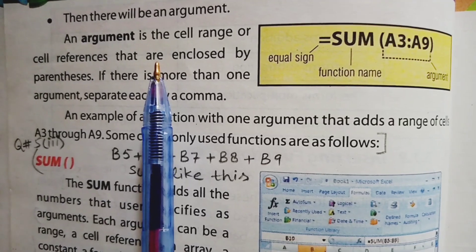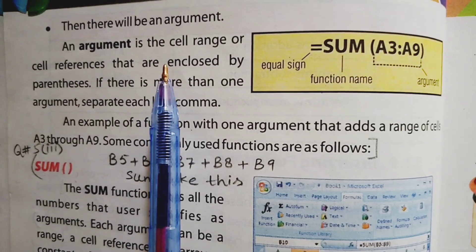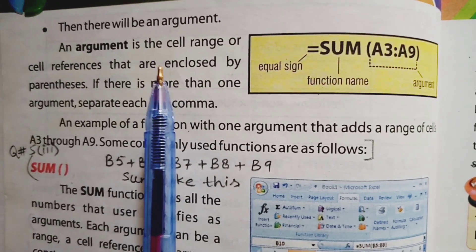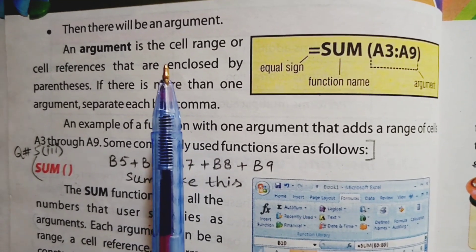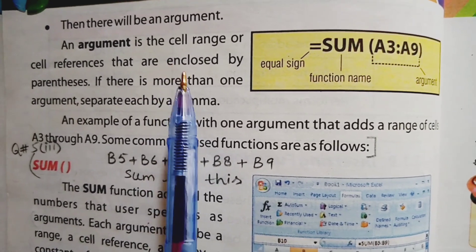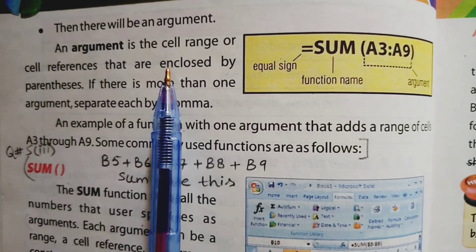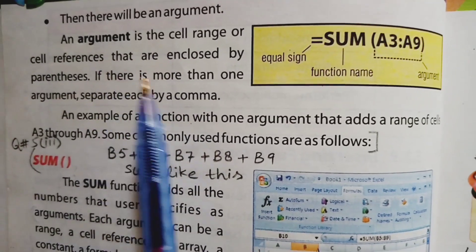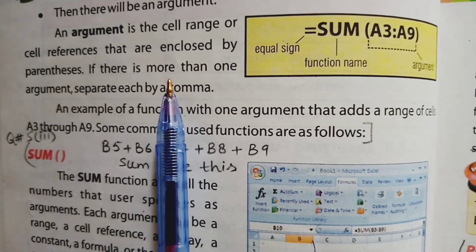A cell range is represented using a starting cell reference and an ending cell reference. For example, we can say the cell range starts from one cell and ends at another — this is a cell range. If we enclose this cell range in parentheses, it becomes an argument. If there are more arguments, we can use a comma to separate them.